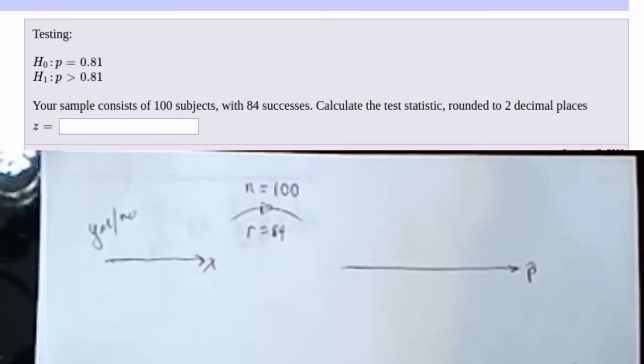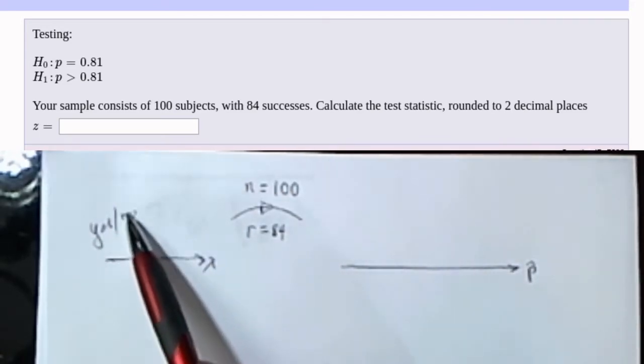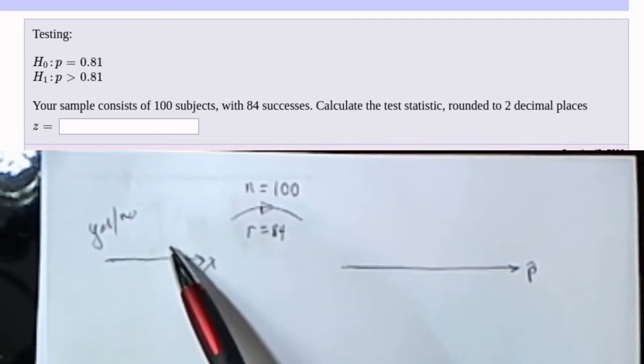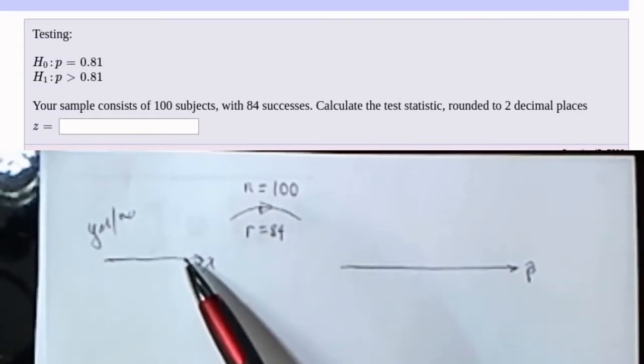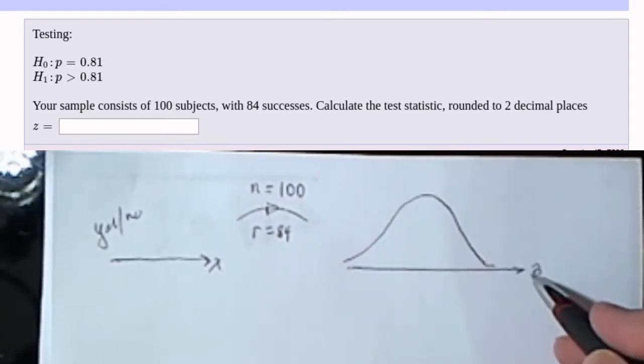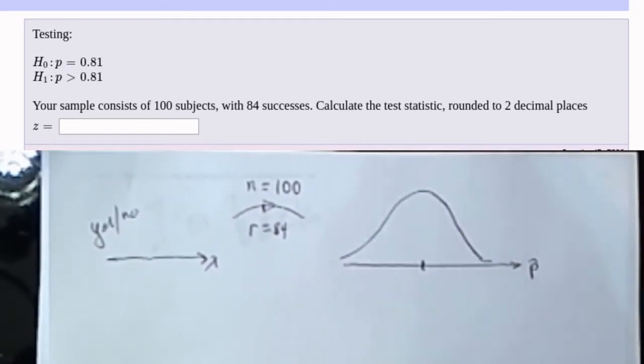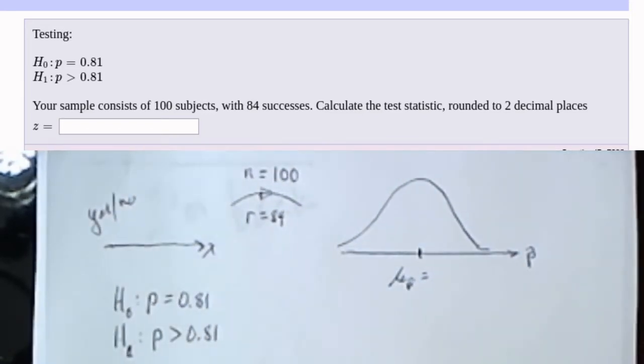So now what we're thinking about is the distribution of all sample proportions of size 100. So we look at every single possible sample that we could take from this original population. We look at the proportion of yeses in each one of those samples, and then we look at the distribution of those sample proportions. Under the right assumptions, this distribution of sample proportions will be normally distributed. We had already observed in this problem that the null hypothesis is claiming that the proportion is 81%. And the alternative hypothesis is claiming that the proportion is significantly greater than 81%.